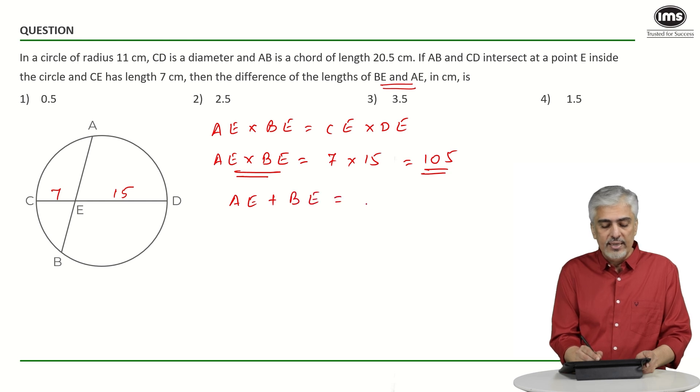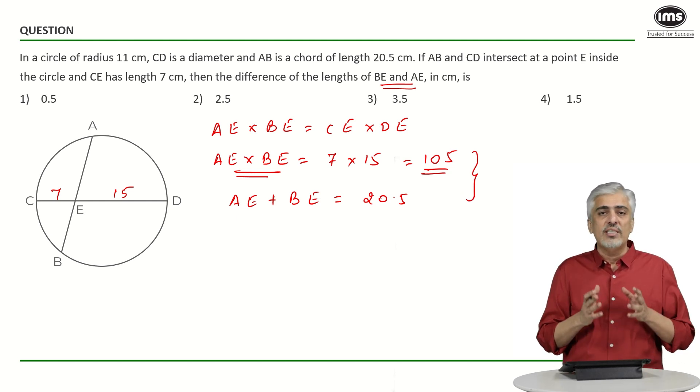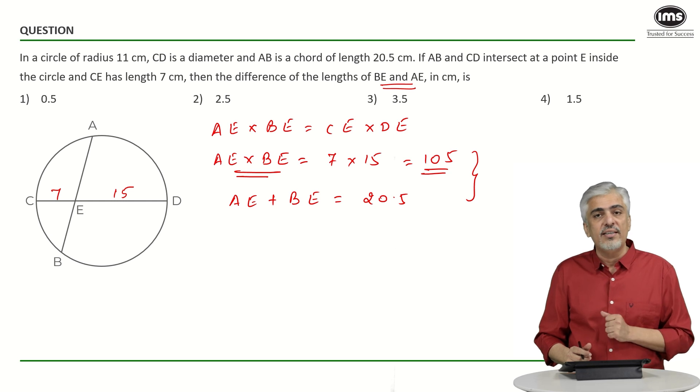I also know their sum because the full AB is 20.5, so AE plus BE is 20.5. At this stage you have different options for this calculation. You could think of two numbers whose product is 105 and sum is 20.5. The numbers were very easy to get. If you couldn't get it, you could have done a quadratic equation by substituting AE in terms of BE.